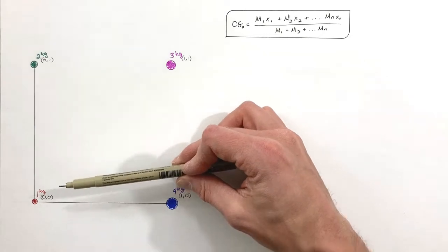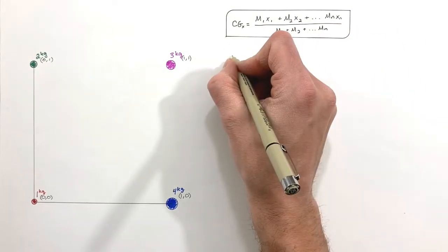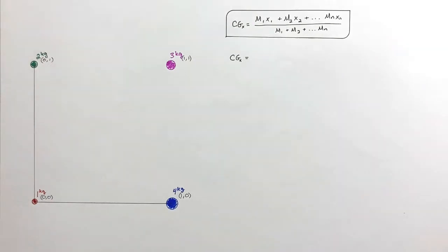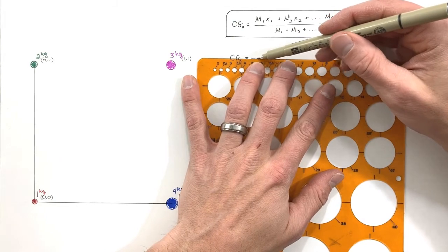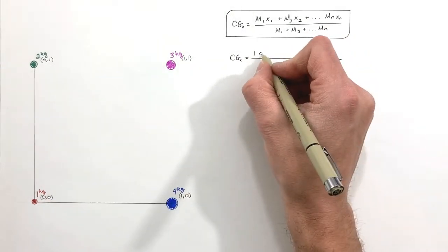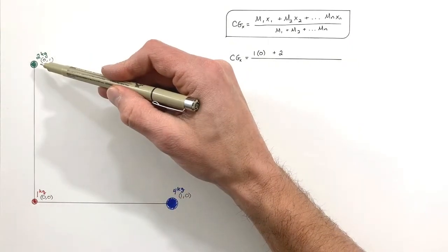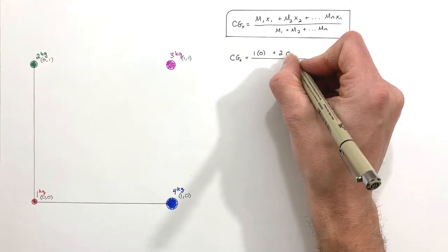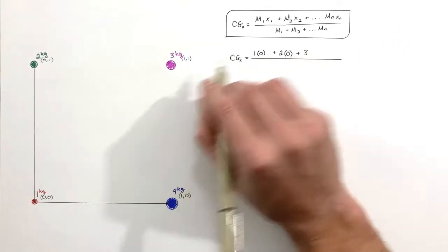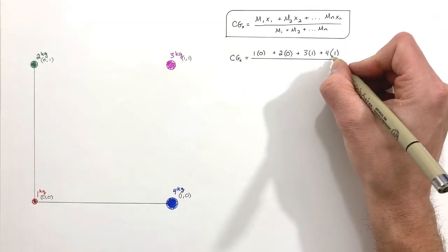We're simply going to do some bookkeeping — going through each particle and plugging into the equation. Starting with the one kilogram particle at the origin, its horizontal position is zero. The two kilogram particle is above the one kilogram particle, but along the x-axis it is still at a position of zero. The three kilogram particle has a horizontal position of one. And lastly, the four kilogram particle is also at an x-position of one.